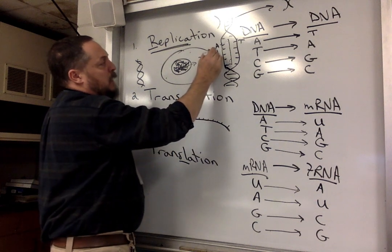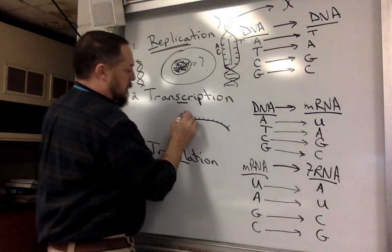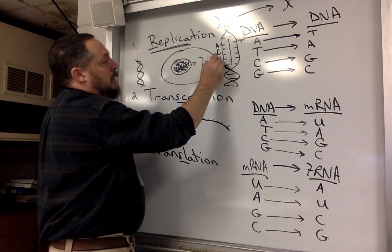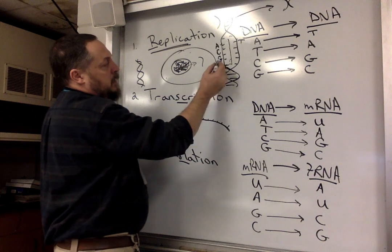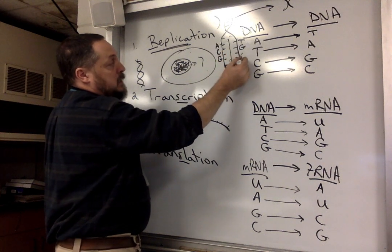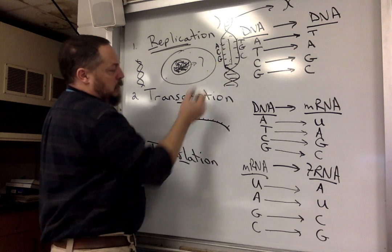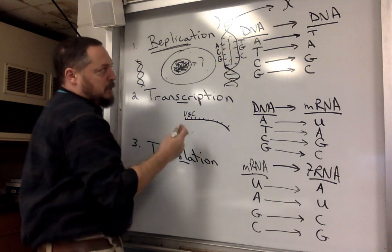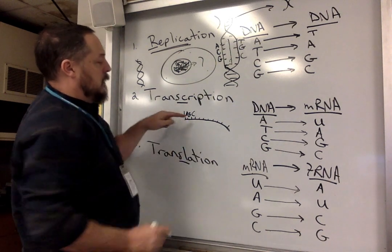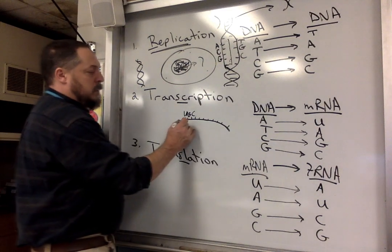If we had a G in the DNA, it would pair with C on the DNA strand, but on the mRNA it produces a C. If we had a G, the mRNA shows a C. So some letters are the same but some differ — and notice there is no T in mRNA. This is how the messenger strand is made.